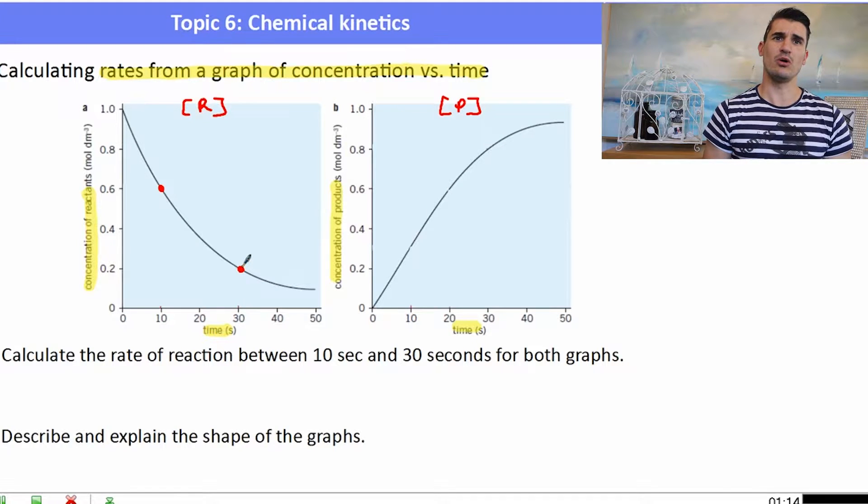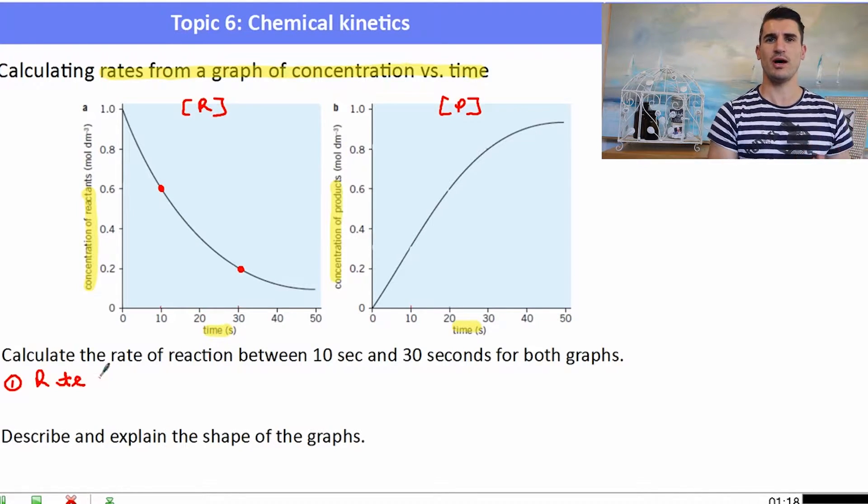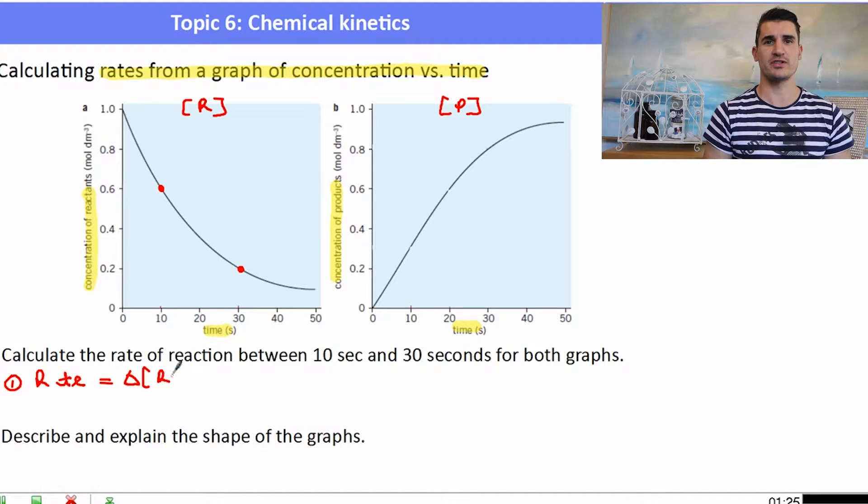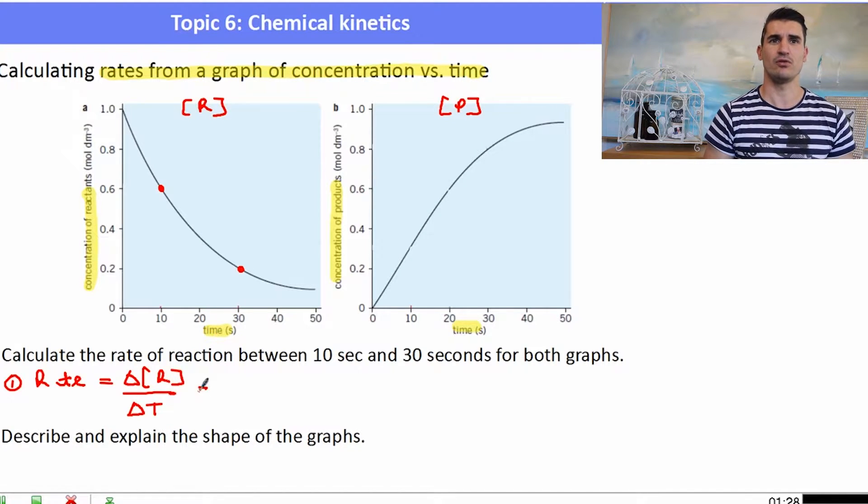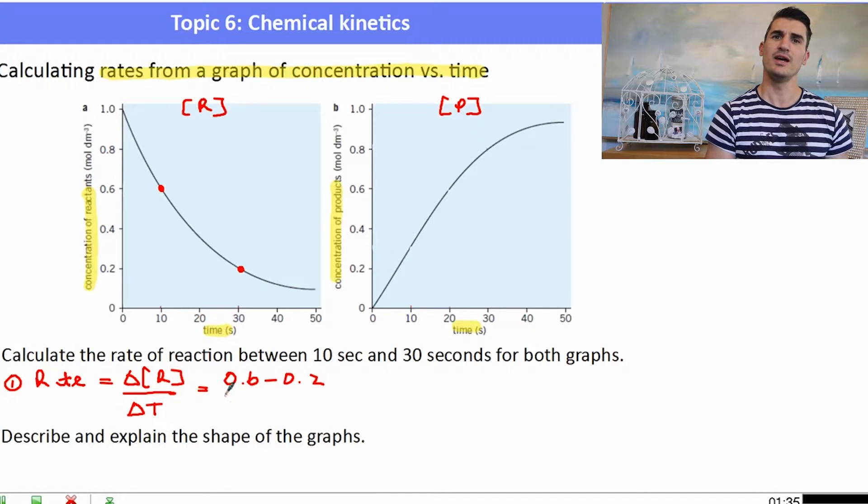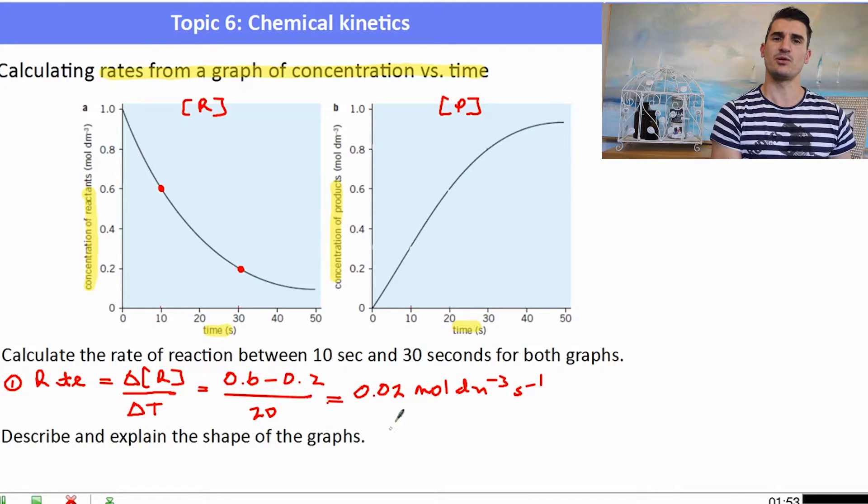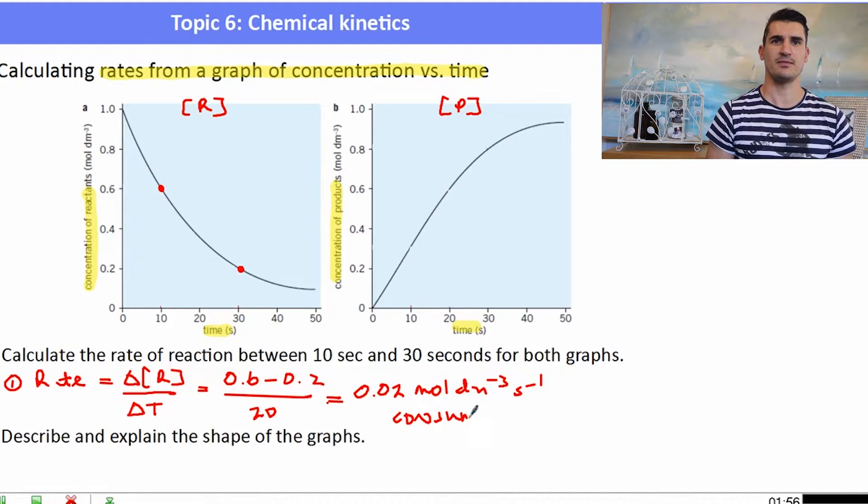So what we need to do is go on and look at the points on this graph and then apply our rate formula. Now our rate formula is the change in concentration of a reactant or product over time, and we never want to have a negative number for a rate. So to work out the change in concentration, we would do 0.6 take away 0.2, and we would divide that by the time period, which in this case is 20 seconds. So doing that calculation, we have 0.02, and now I need to have a look at my units. My units for the concentration were mole per decimetre cubed, and my unit for time was second. So it's mole per decimetre cubed per second. Now that is consumed. Our reactants are being consumed, but we wouldn't put the negative there because we never have a negative reaction rate.